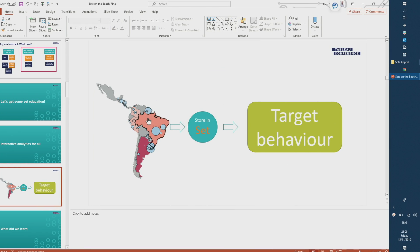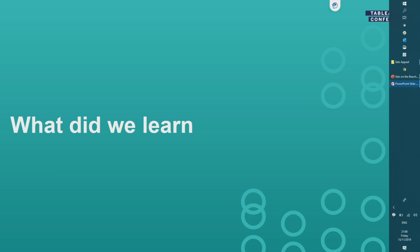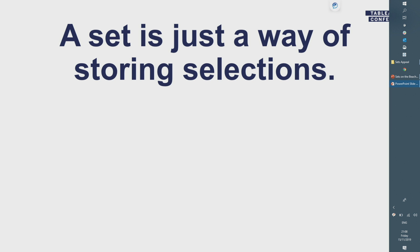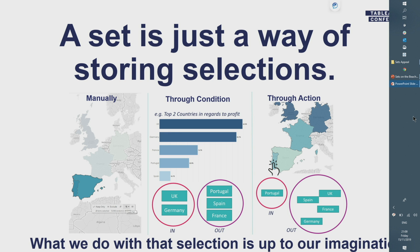So that was what I wanted to show you today. I was really keen that you understand the ideas of sets, how they operate and work, and why they are super powerful — but also that you see use cases you can take home, rebuild, and customize. The key message is: a set is pretty much just a way of storing selections. That's all a set does. But the way that selection is created can happen in very different ways — manually, through a condition, or through an action — and it's the combination of all three that makes sets super powerful. What you do with your selection is up to your imagination.